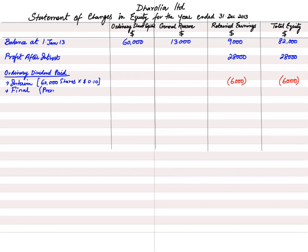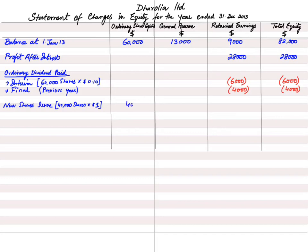Dharolia Limited issued 40,000 new shares at $1 each, giving $40,000 of new share capital. Whenever new shares are issued, the ordinary share capital column increases, and so does the total equity column. The total share capital becomes $60,000 + $40,000 = $100,000.